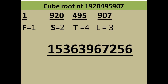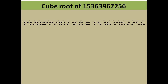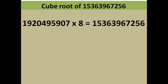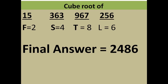We were originally finding the cube root of the even number 15363967256. Multiply 1243 by 2 to get 2486, which is the final answer. This works because 1920495907 × 8 = 15363967256, the cube root of 1920495907 is 1243, and the cube root of 8 is 2, so 1243 × 2 = 2486 is the cube root of 15363967256.